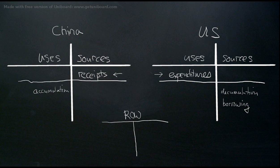And have financial decumulation or borrowing here, or borrowing here, and accumulation here. So that the rest of the world is acting as an intermediary.